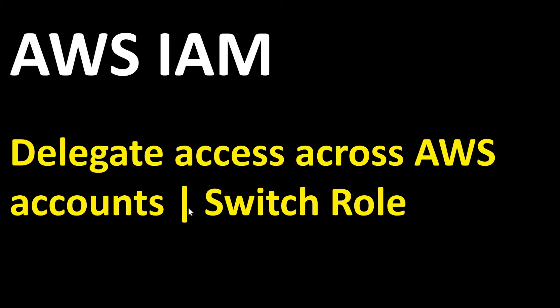Hi guys, welcome to my channel. In this video, I will discuss how to use IAM roles to delegate access to resources in different AWS accounts. For the demo of this video, I have created two AWS accounts named Production and Development. We will share an S3 bucket created in the Production account with the users in the Development account, and we will see how users in the Development account can use Switch Role to access S3 buckets in the Production account.